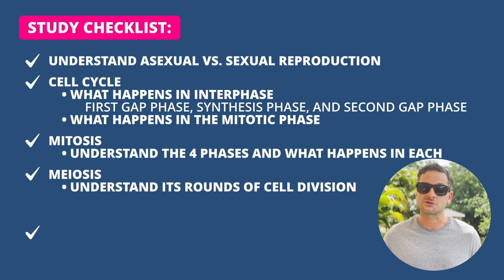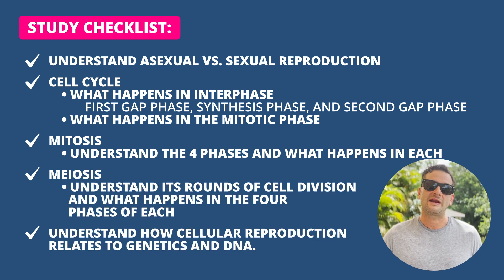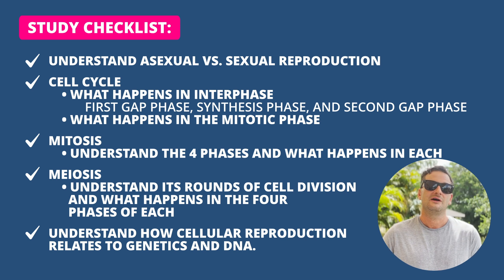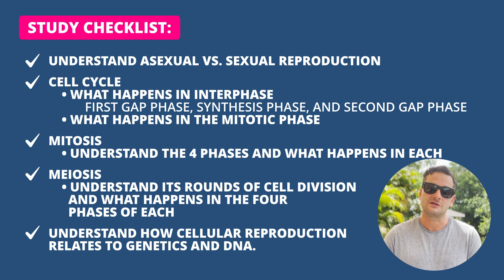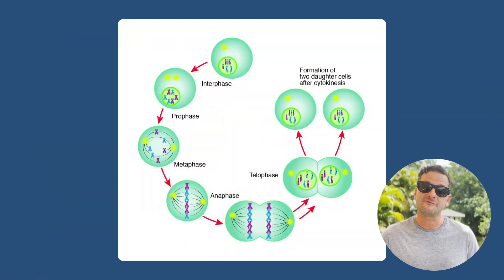Cellular reproduction is another topic you'll see questions on. There are two ways living things reproduce: asexually and sexually. Know the cell cycle and what happens in interphase — the first gap phase, synthesis phase, and second gap phase. For mitosis, have a solid understanding of the four phases and what happens at each stage. From mitosis, you also have meiosis — understand its rounds of cell division and what happens in those four phases.